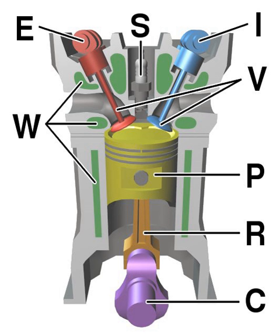An internal combustion engine is a heat engine where the combustion of a fuel occurs with an oxidizer in a combustion chamber that is an integral part of the working fluid flow circuit.